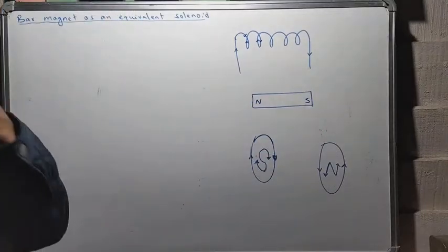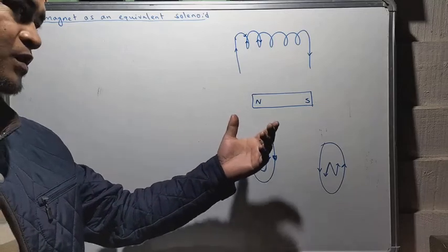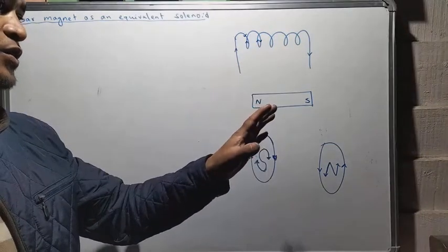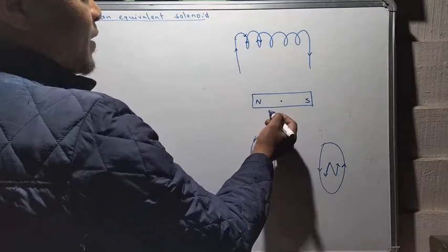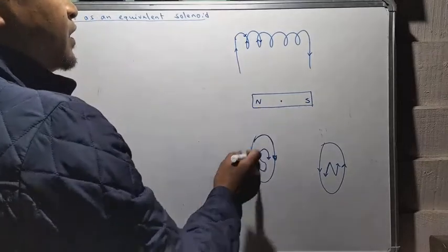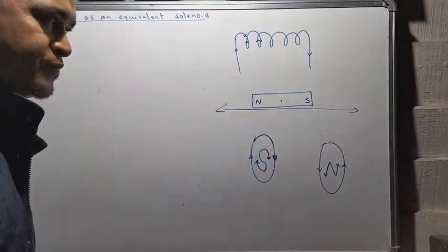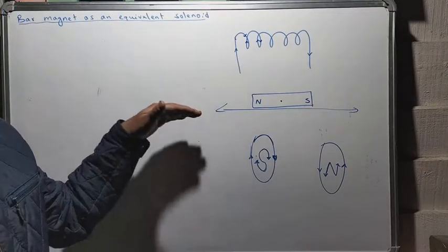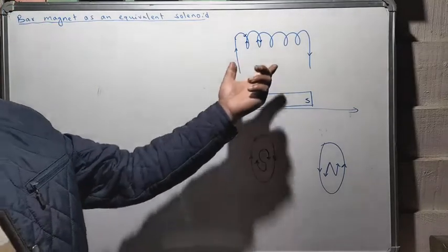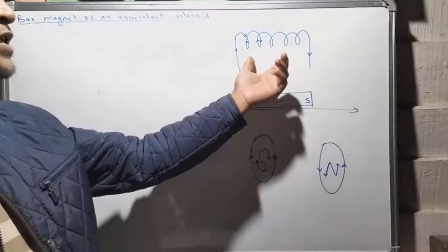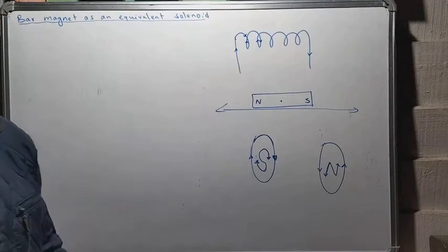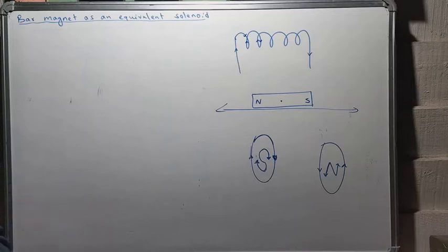Because this solenoid carrying current shows the same properties as a bar magnet, let's see what those properties are. The first property: when a bar magnet is freely suspended, it points in the north-south direction of the geographical earth. Similarly, because this solenoid behaves like a bar magnet, when you suspend this solenoid freely, it will also point in the north-south direction, just like a bar magnet.